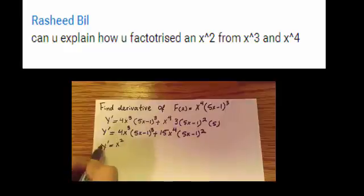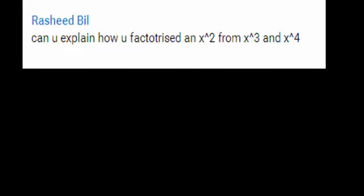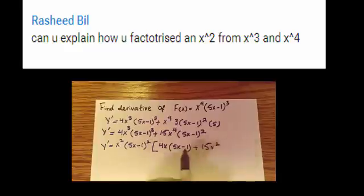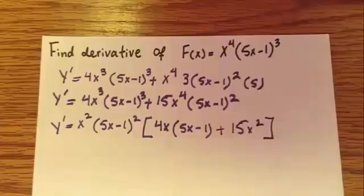It's in reference to a previous tutorial that we did entitled Math Question, Finding the Derivative, and I invite you guys to have a look at that. His question asks, can you explain how you factorized an x squared from x cubed and x to the power of 4?